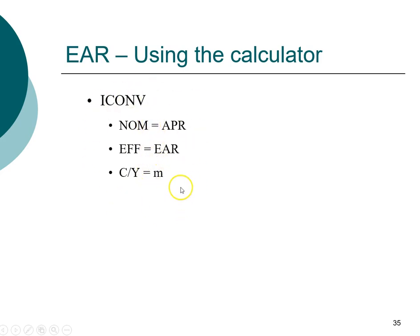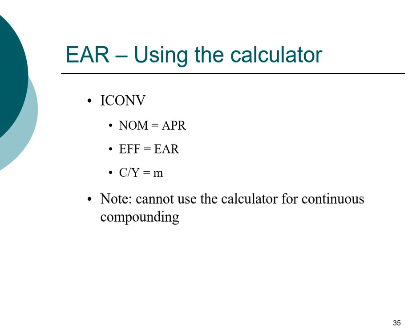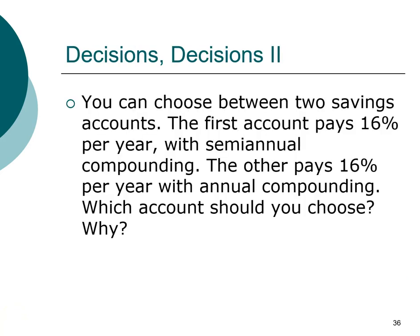This is just notation. Pause the video and put this on your formula sheet so that you don't have to memorize all these conventions. Note that you cannot use the calculator for continuous compounding. Now let's look at examples using both the formula and the calculator to compute effective annual rate. The most important use of effective annual rate is that it enables us to compare investments with different compounding frequencies.